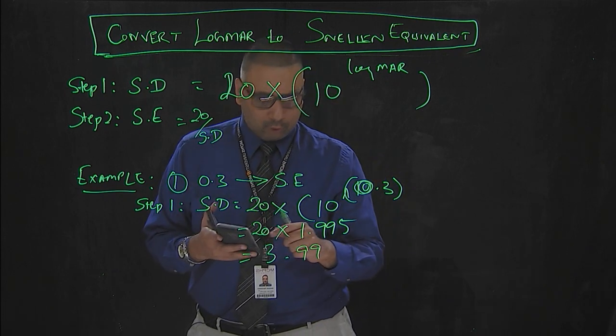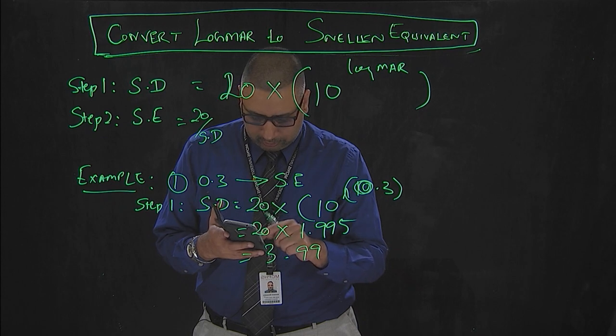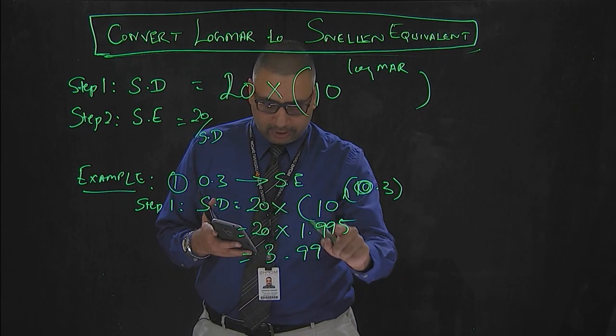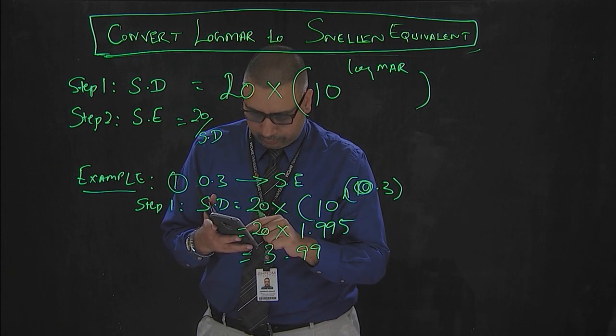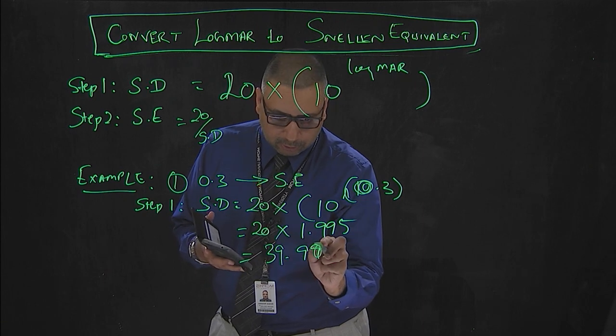Let me try that again one more time. 10 to the power 0.3 is 1.995 multiplied by 20 would actually give you 39.90, this is a small error here.